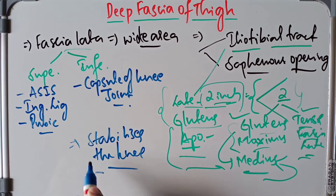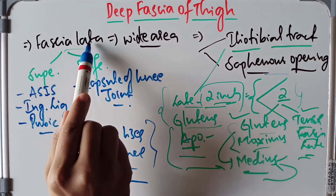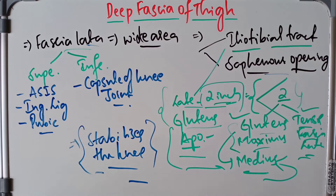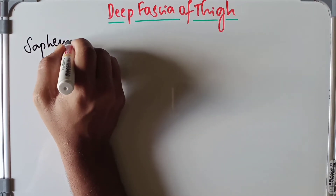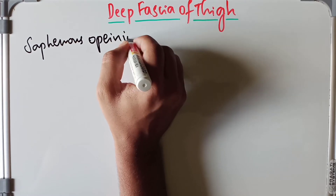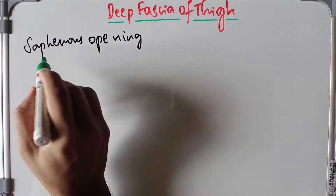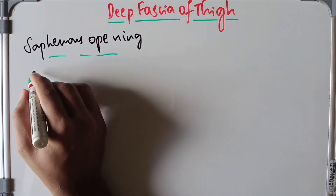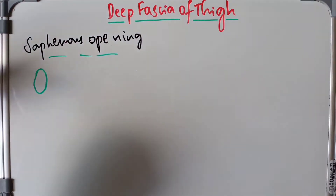Now we are going to learn about the saphenous opening, which is a modification of the fascia lata — the deep fascia of the thigh. The saphenous opening is an oval opening in the fascia lata, located in the upper medial part of the thigh.